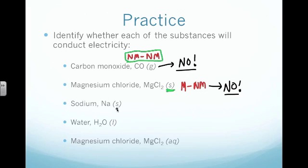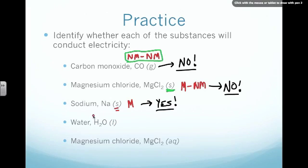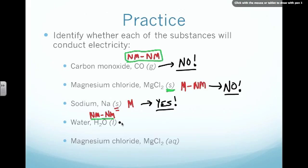Next we have sodium, Na — it's a solid. We go to the periodic table and sodium is all the way on the left-hand side, so this is a metal. There's nothing else it's combined with. It doesn't really matter that it's a solid because metals always conduct even as a solid. So this one we would say yes, because it is a pure metal. Next we have water. Looking at hydrogen — remember hydrogen was our exception; it's on the left-hand side but still considered a nonmetal. Oxygen is on the right-hand side, so that's a nonmetal as well. Since I have two nonmetals connected, this thing is not going to conduct electricity — so this is also a no.